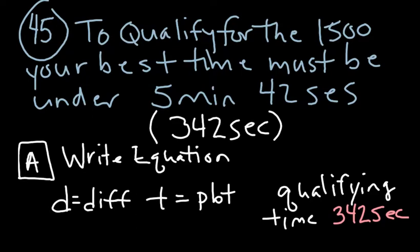Number 45, in order to qualify for a girls' regional 1500-meter race, an athlete's personal best time for the season must be under the qualifying time of 5 minutes 42 seconds. 5 minutes 42 seconds is the same as 342 seconds. The way I got 342 here is 5 times 60. 5 minutes is 60 seconds. 5 times 60 is 300 plus the 42 seconds we already had.